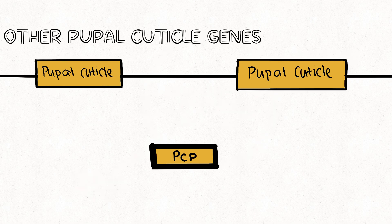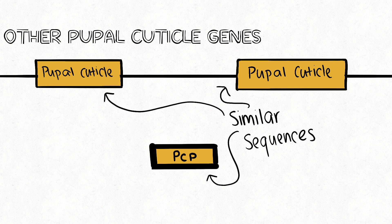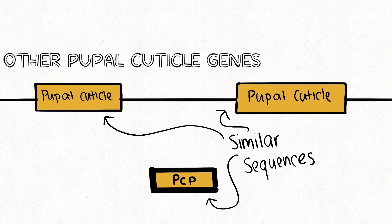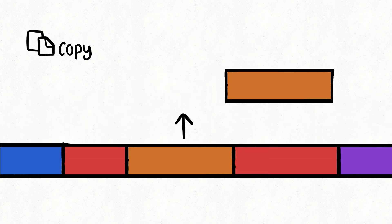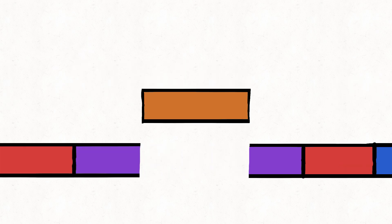As well as this, other developmental pupil cuticle genes within the Drosophila genome have been found to share striking resemblance to the intronic GART nested gene. Most predictions of how this came to be propose the idea of transposition, where a piece of DNA is able to move from one part of the chromosome and insert itself into another.